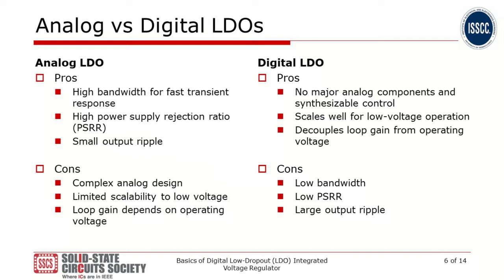Analog and digital LDOs have their advantages and disadvantages. Analog LDO can achieve very high bandwidth, resulting in fast transient response and load regulation. It also enables high power supply rejection ratio, also known as PSRR. The ripple on the output is also small, which is important for sensitive loads. However, analog LDO requires complex analog circuit design and also exhibits limited scalability to low input voltage. The control loop gain also depends on the operating voltage. On the other hand, digital LDO requires no major analog component, which lends itself to a synthesizable design and increases the productivity of the design process. It also scales well for low voltage operation and can decouple loop gain from operating voltage.